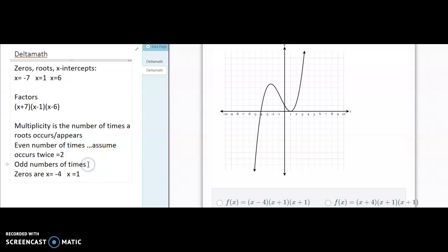And then if it's odd or if we find the multiplicity is odd, we're going to assume it appears one time. Again, this is just an assumption that delta math had to have made because this one could have been to the fourth degree.